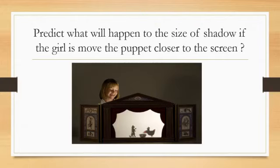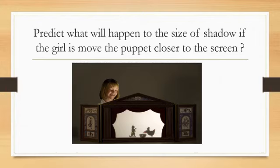There is one question for you: predict what will happen to the size of the shadow if the girl moves the puppet closer to the screen. The puppet is closer to the screen, so the shadow becomes smaller, because it is far away from the light source — so we get a small shadow.